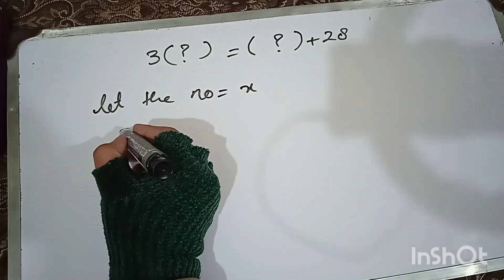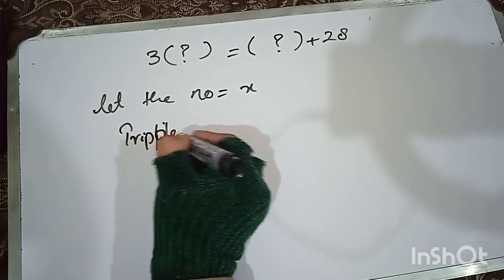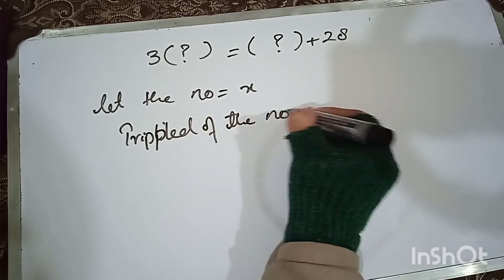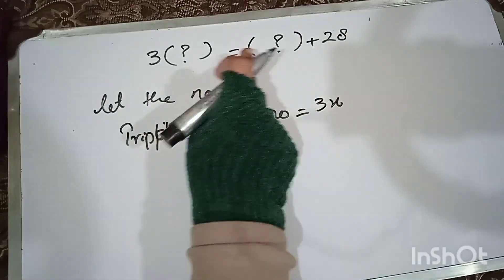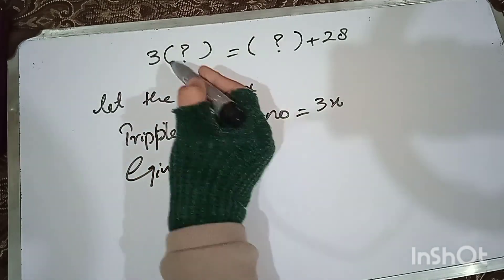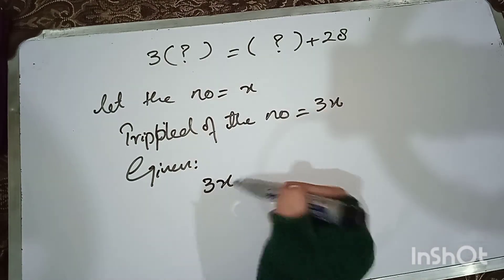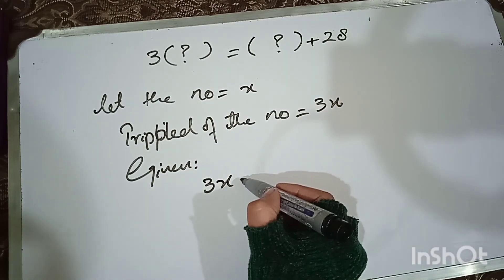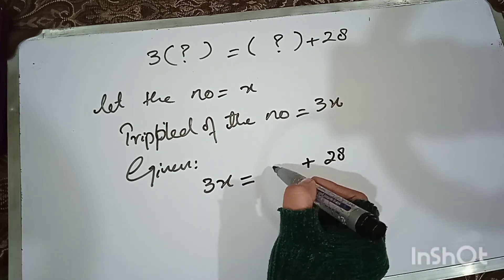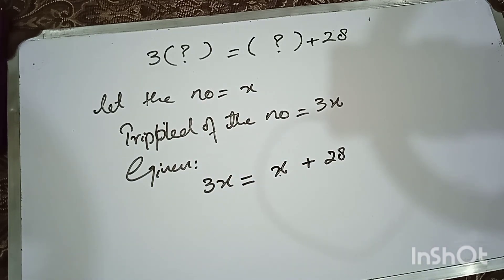If the number is tripled, that means 3x. It gives the same result as when 28 is added to it, meaning x + 28. So the equation is: 3x = x + 28.